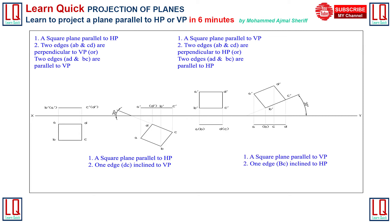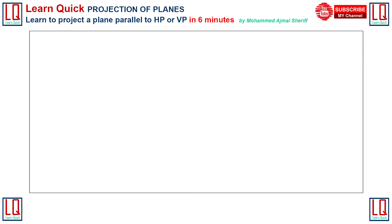When the square lamina is parallel to VP and one of its edges BC is inclined to the horizontal plane, we obtain a straight line in the top view with corners AD visible and corner B invisible.